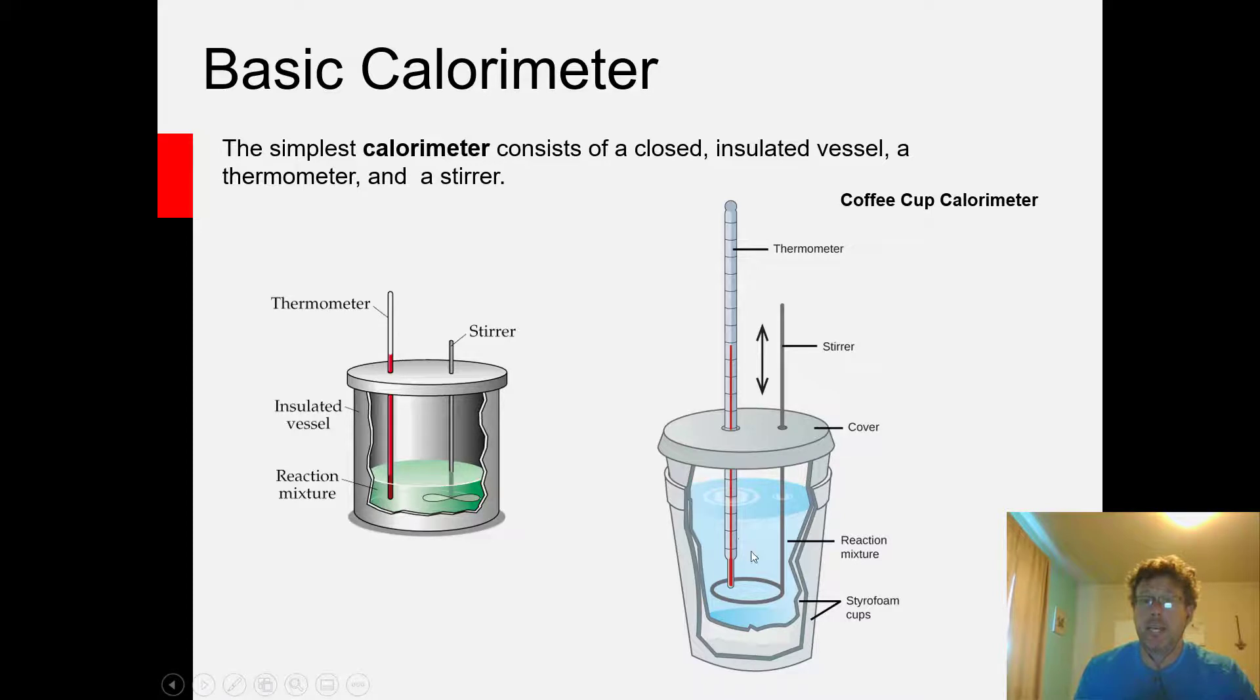If you can measure the temperature change associated with the water in which the reaction is being carried out, then you have a delta T that you can use along with the mass of the water and the specific heat of the water to calculate the total heat released by the reaction.